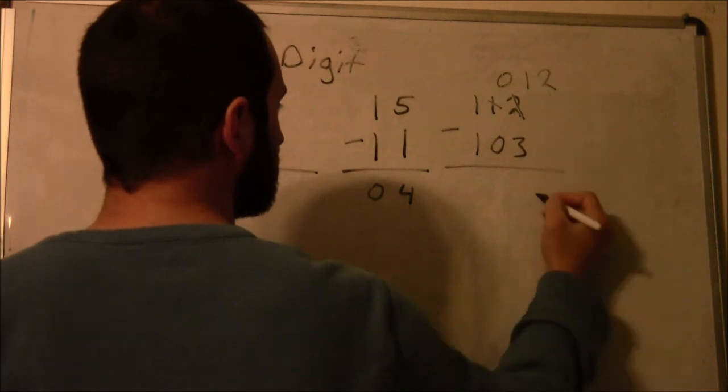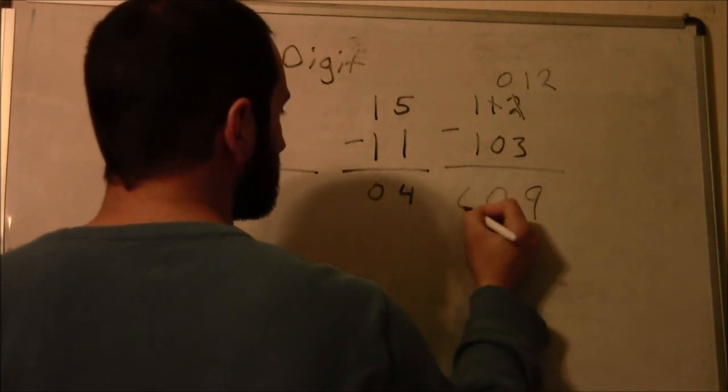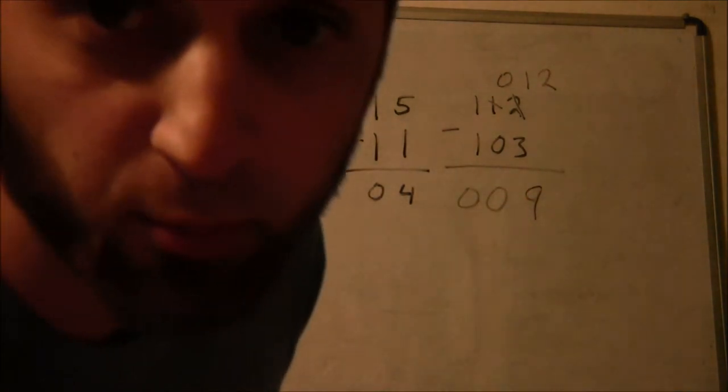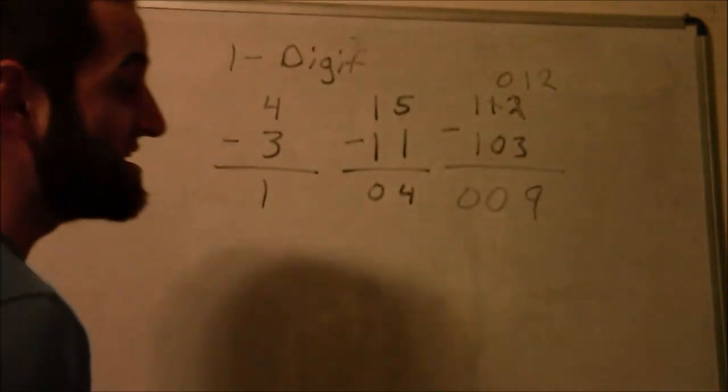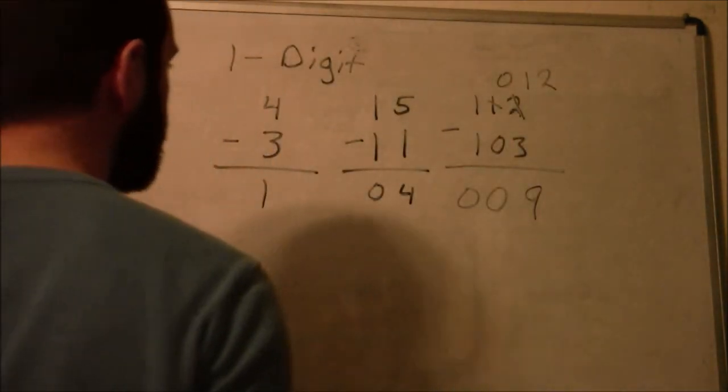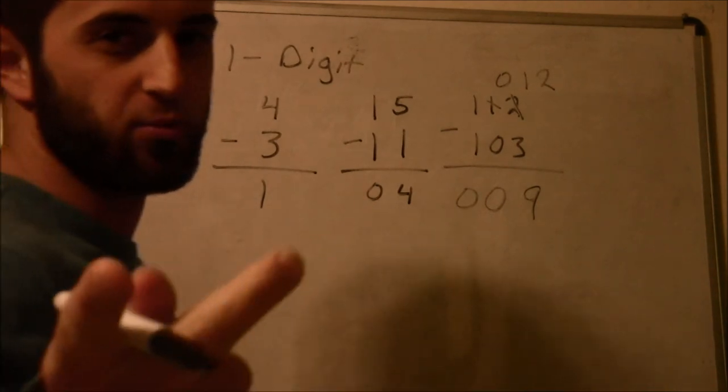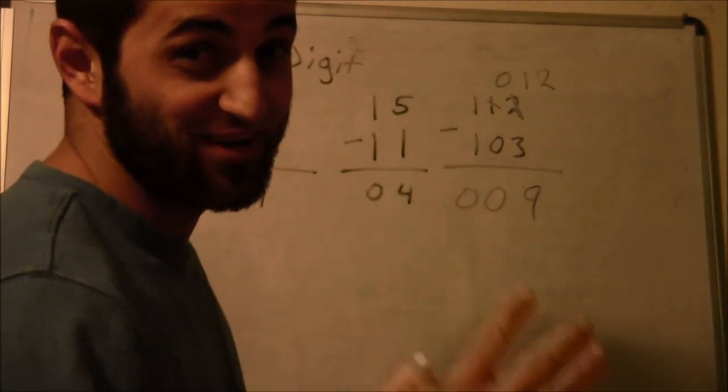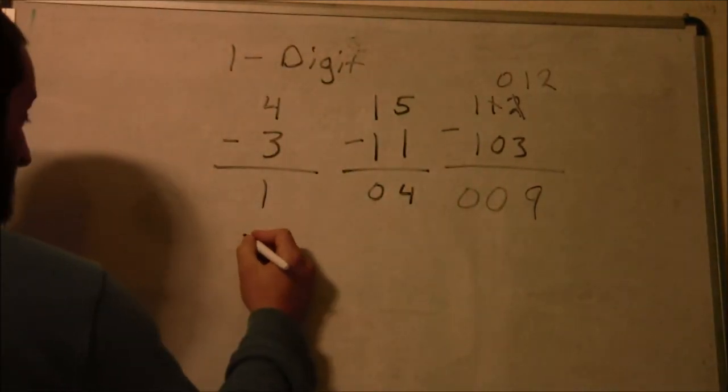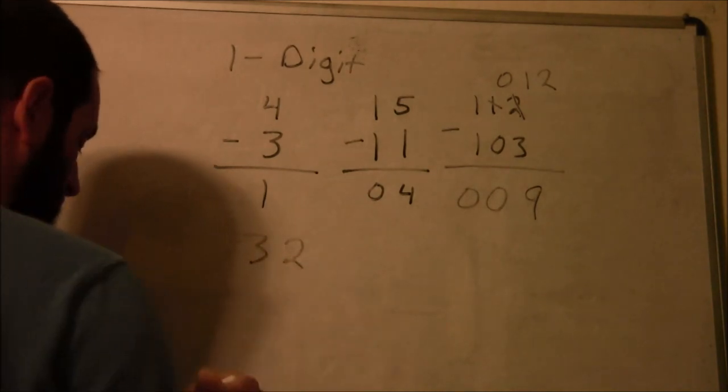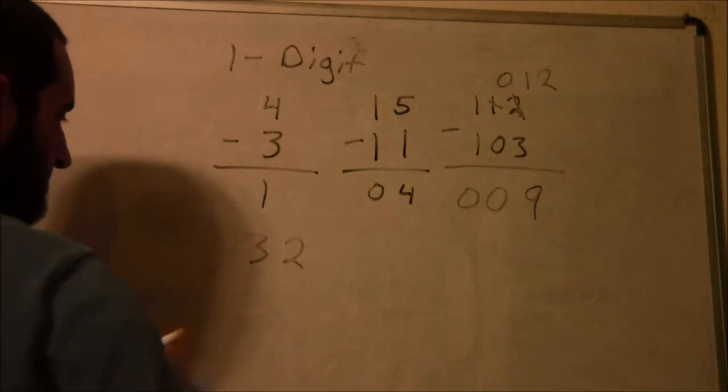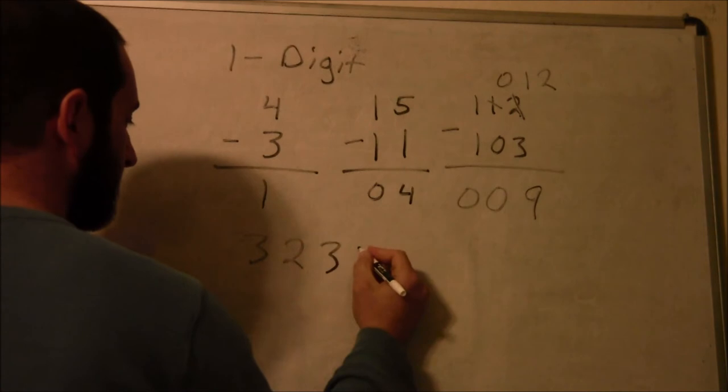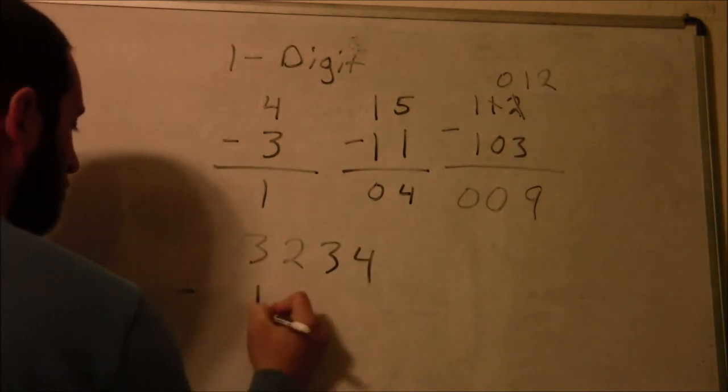Your answer is double oh nine, nine. Four digits subtraction: 3234 minus 1235. Can we do it?